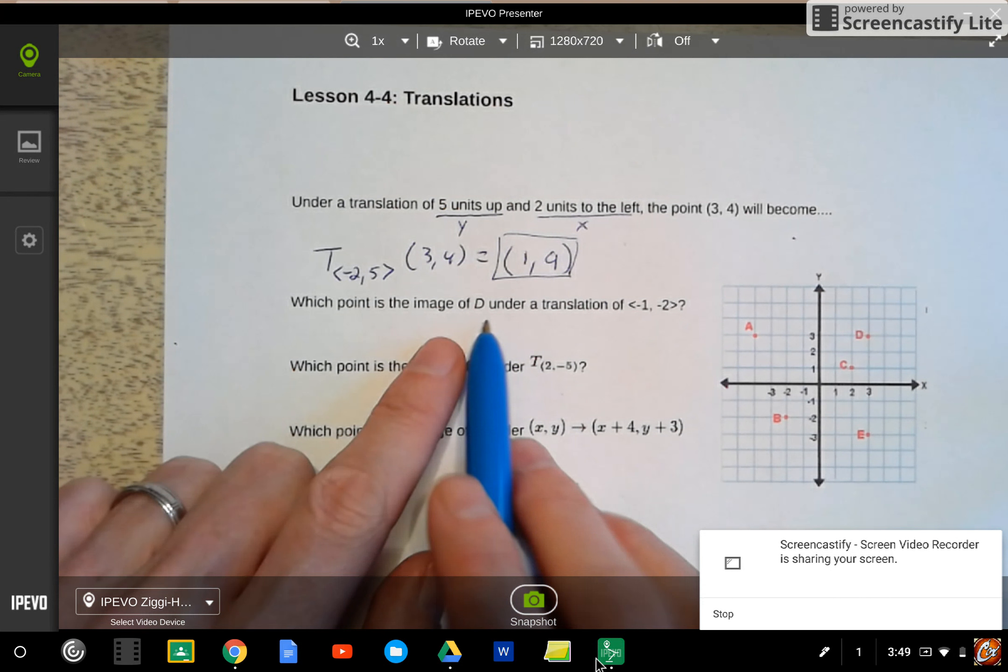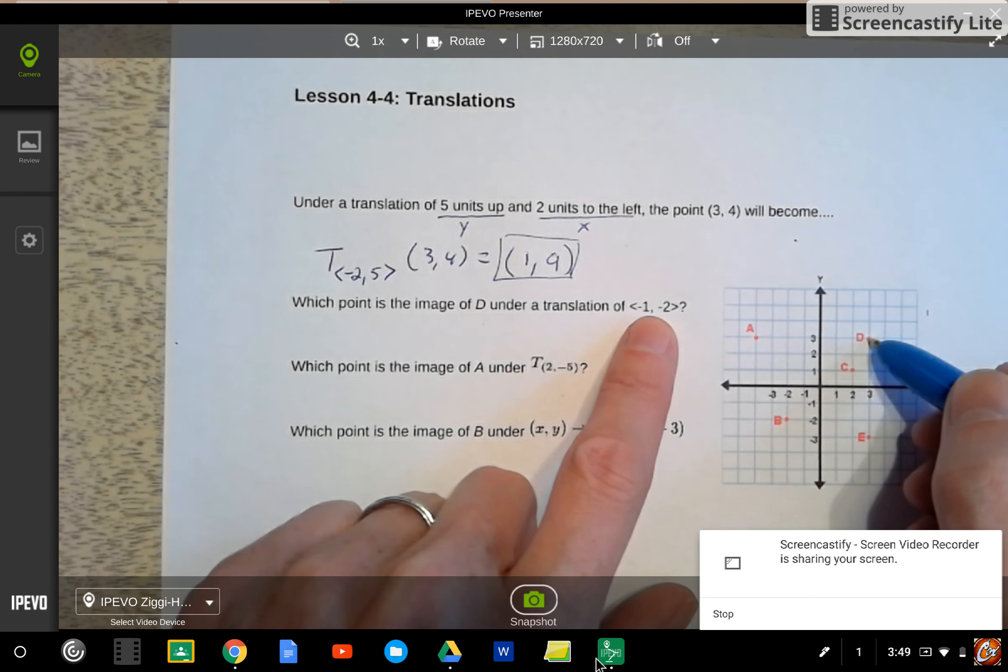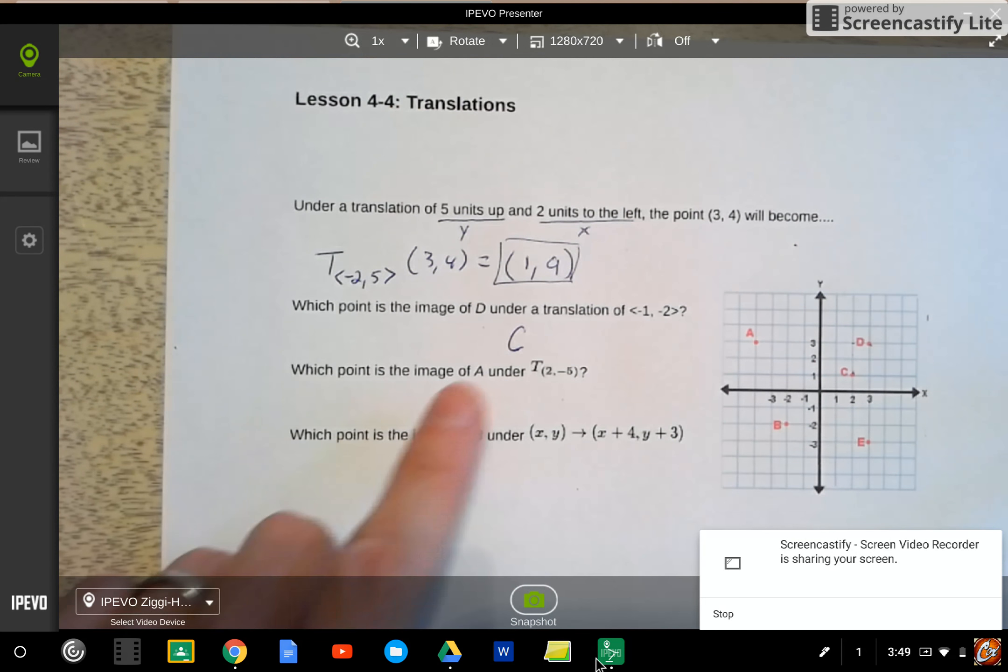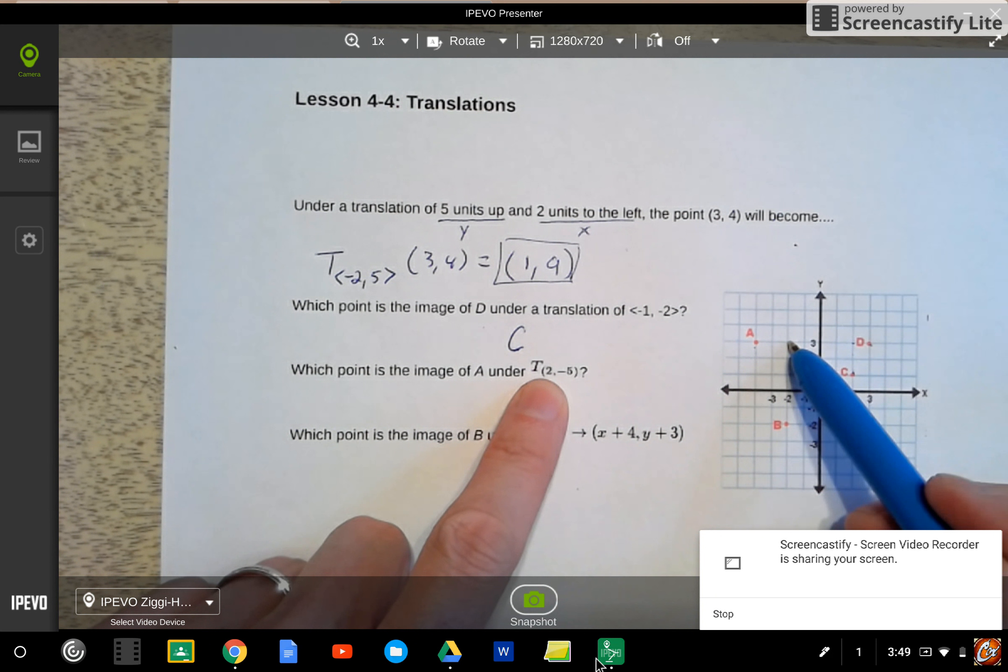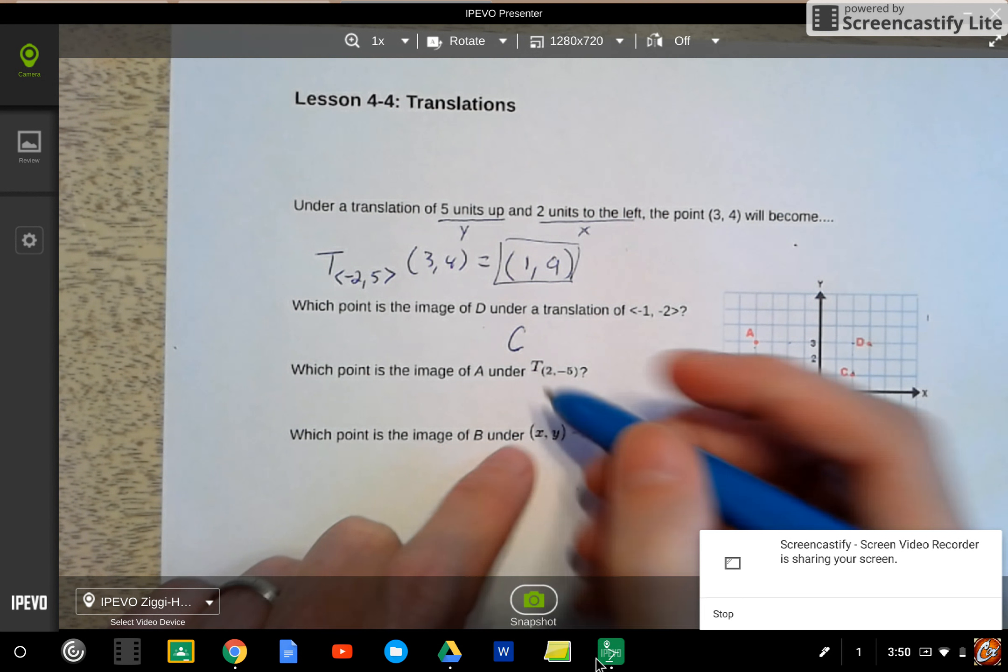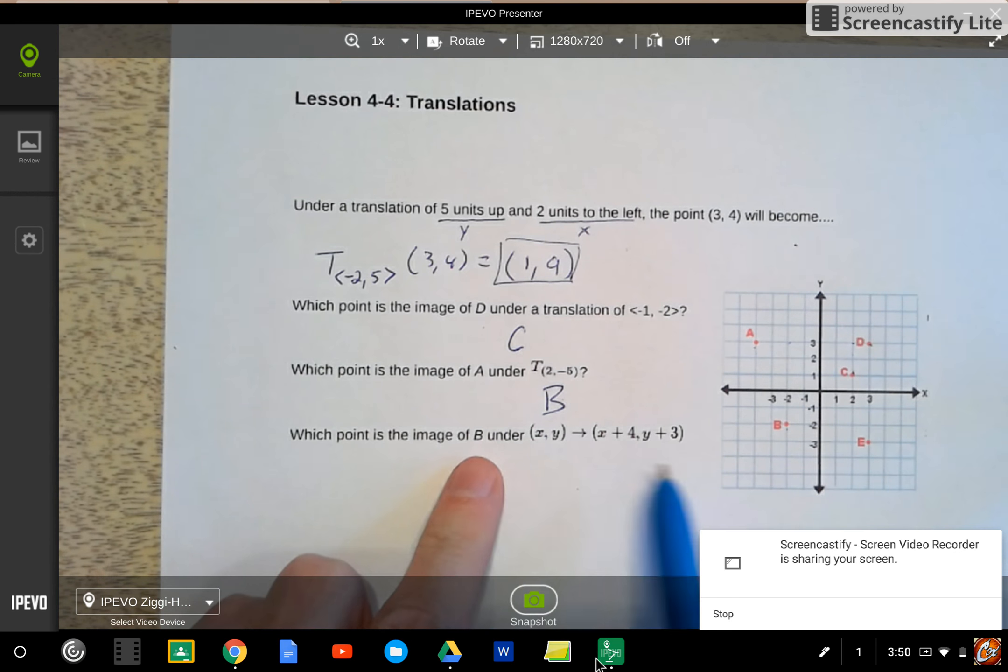Here, take the point d. I'm going to move negative 1, so it's back 1 on x, down 2. That puts me at point c. This one, I'm going to start at point a. I'm going to move 2 to the right, down 5: 1, 2, 3, 4, 5. Puts me at point b. And the last one, I'm going to start at point b. I'm going to move on the x, 4: 1, 2, 3, 4. On the y, up 3: 1, 2, 3. And that puts me at point c.